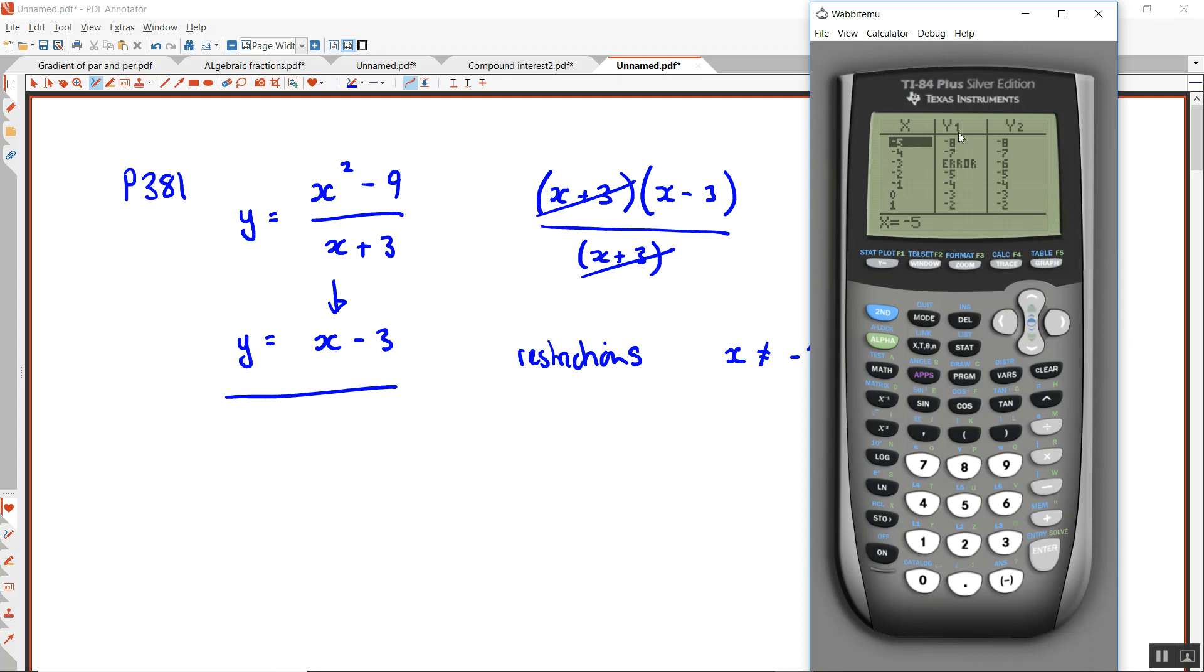You'll notice it says error for y1 and not y2. And that's because, look, y1 is the original. But y2 is the simplified version. So what will the computer and calculator do with x minus 3? What will it assume it is? A function in its own right. It will never assume it's the result of a simplification. So we need to be aware.